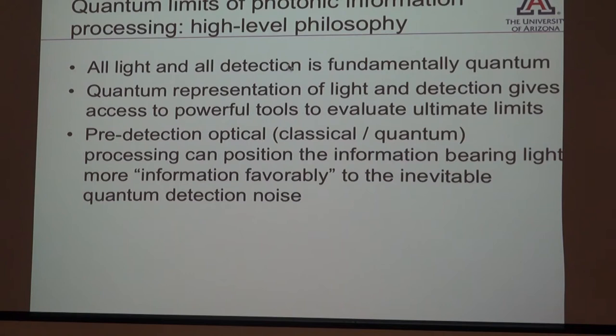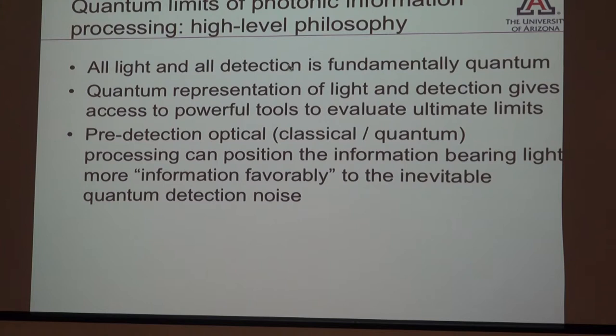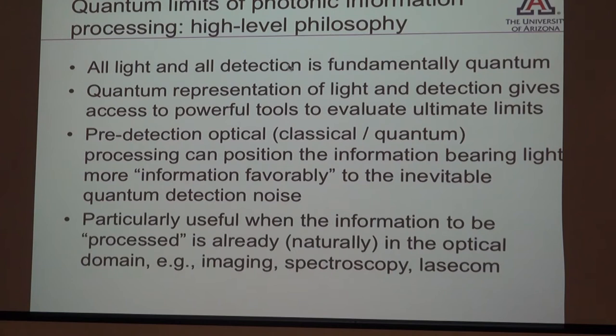Often, if you know something more about what information you're trying to extract from the photon — whether extracting data from a communication channel or from an optical pulse returning from a target — you can predispose that information-bearing light in the most information-favorable manner relative to the inevitable detection noise that is yet to come. All detection has some minimum quantum-mandated noise. What you can do is preprocess the information-carrying light, sometimes classically and sometimes quantum mechanically, to put it in the best possible state before presenting it to that detector noise. This theme runs across my work in both communications and sensing.